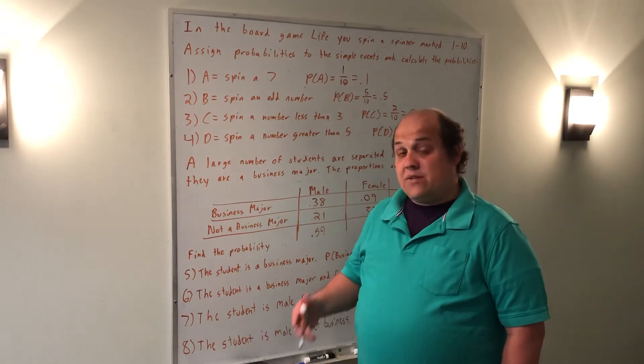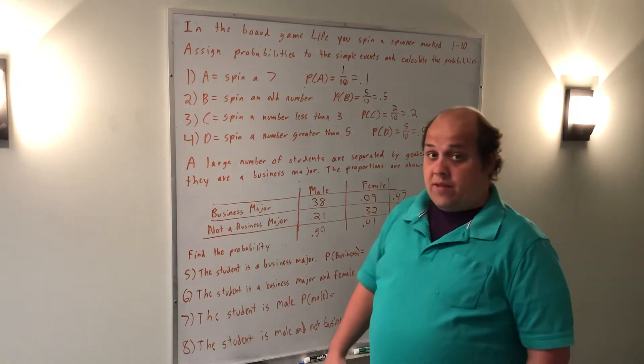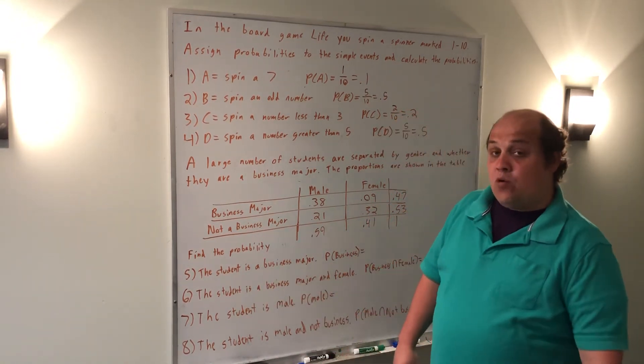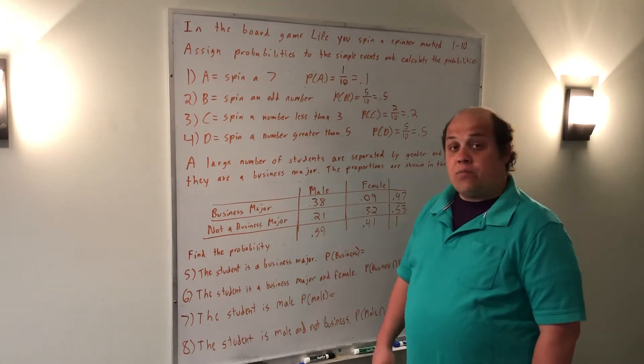But since they gave it to me as proportions, I'm not going to have to divide by the table total when I go to find probabilities. I could still divide by the table total because I'm dividing by 1 and we get the same thing, but it's just an unnecessary step when it's already in proportion form.